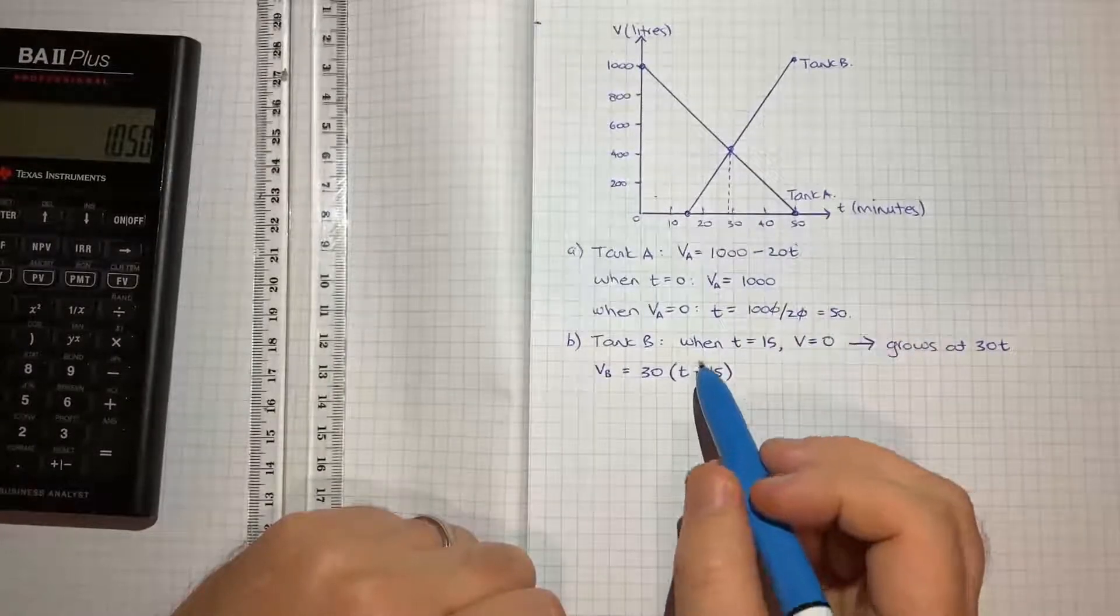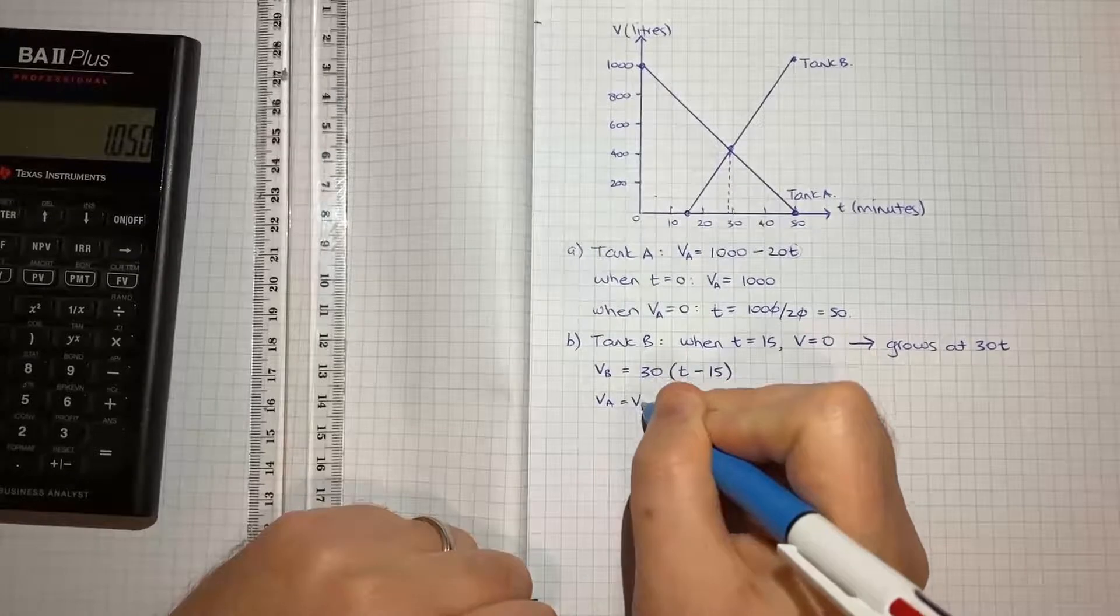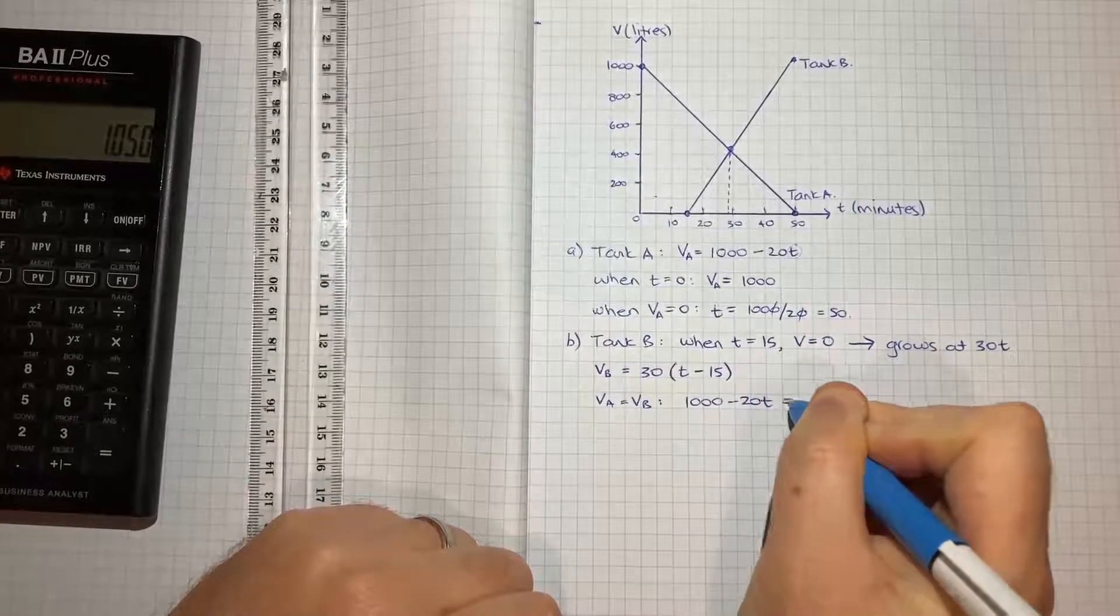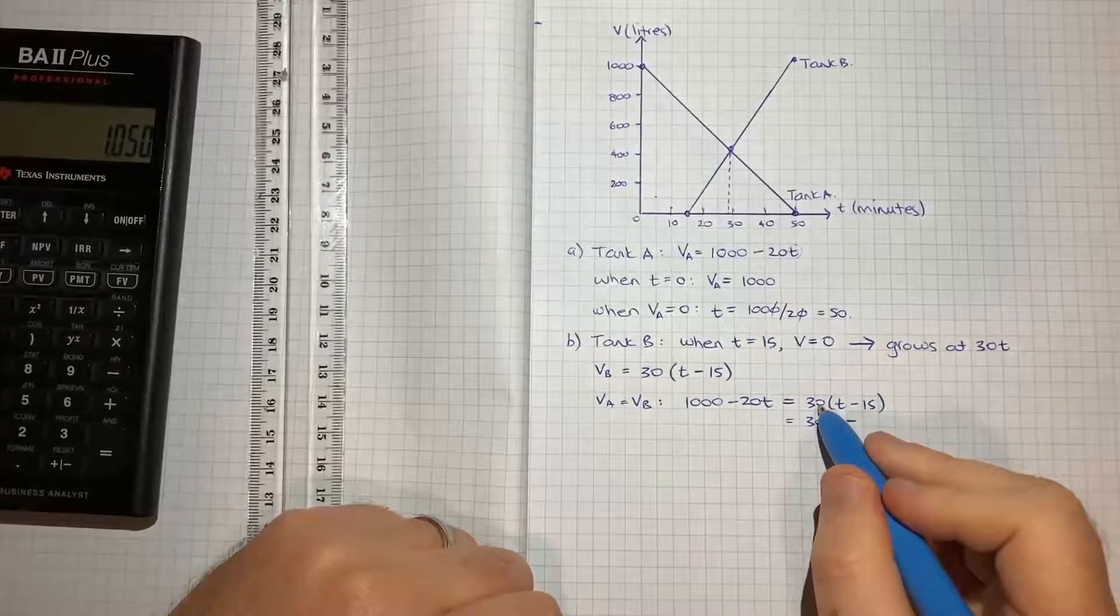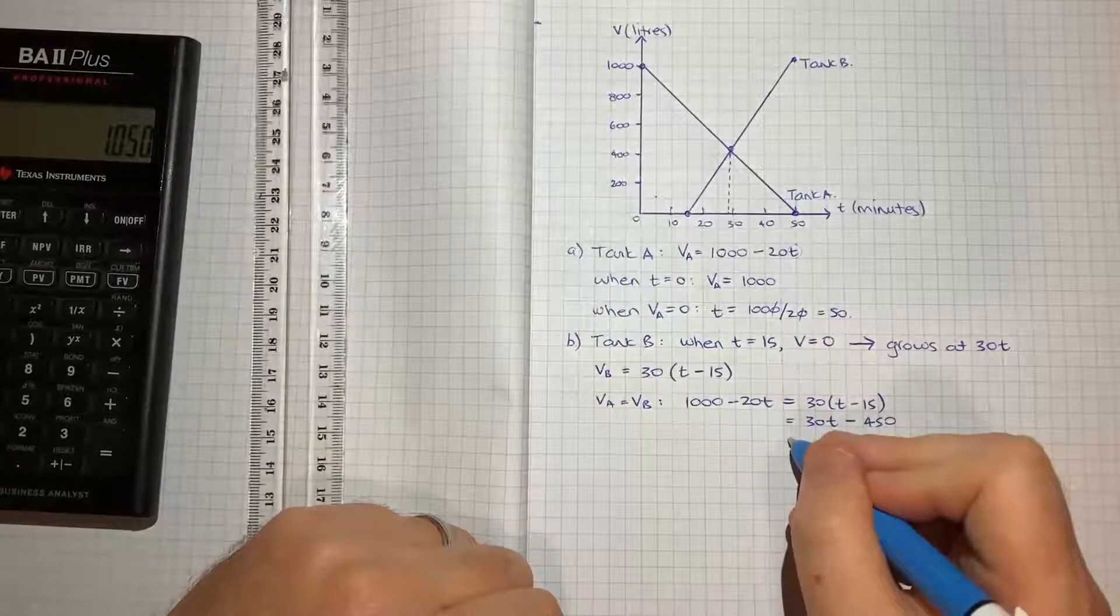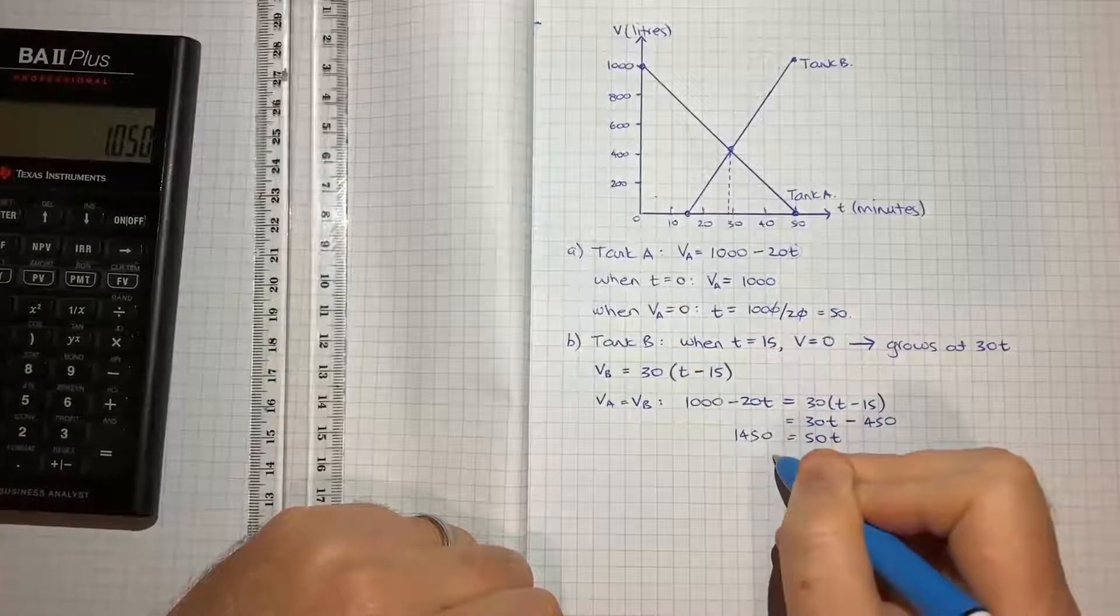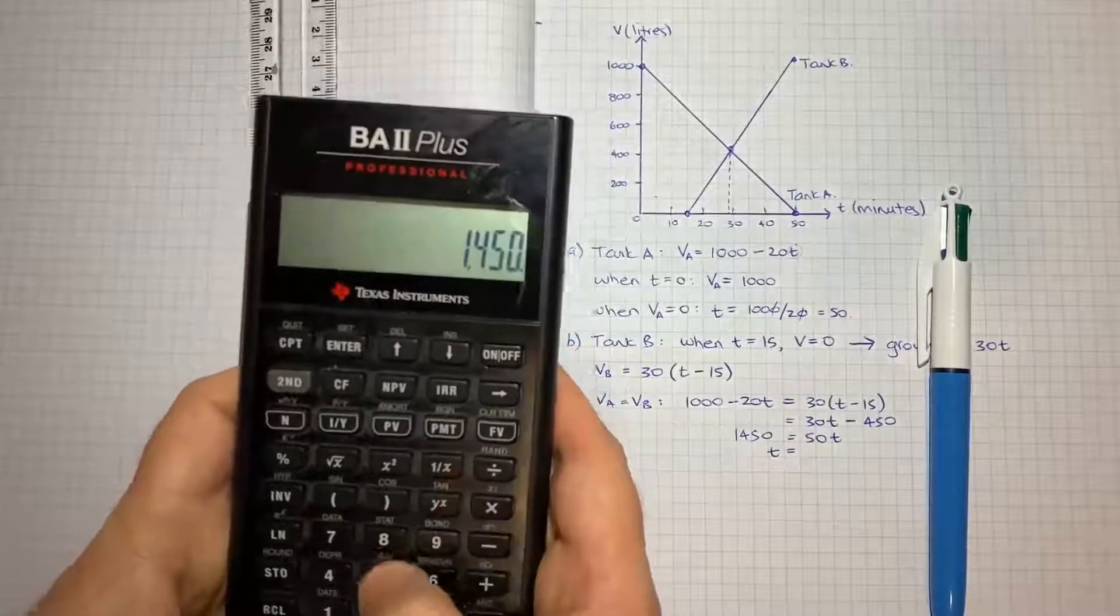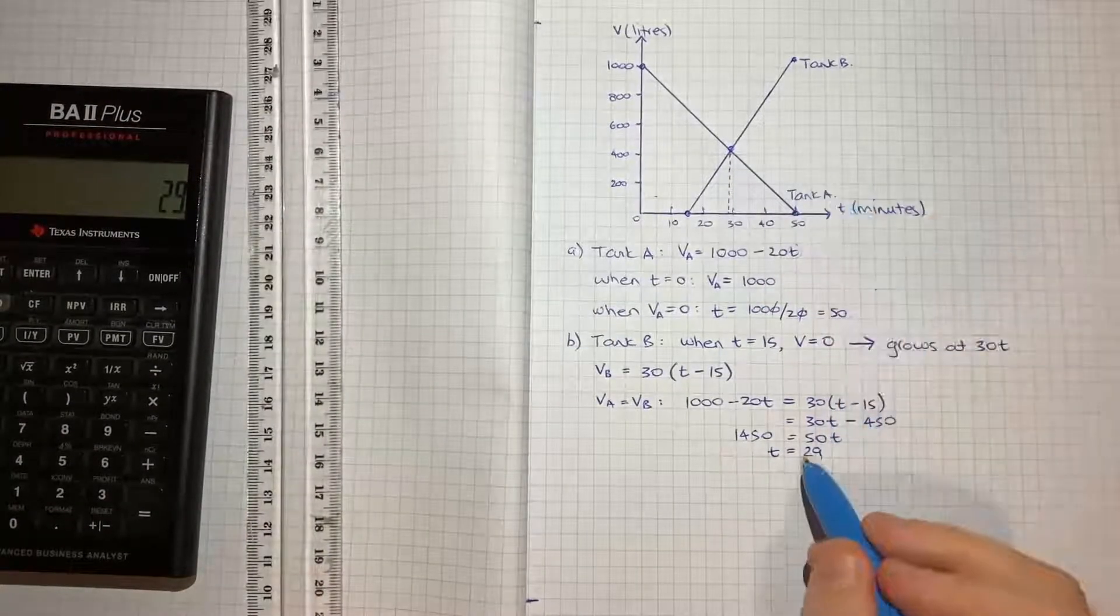Given we can't do that here, I'll use the 'or otherwise' approach, which is algebra. We can let VA = VB and solve for T. So VA = 1000 - 20T, VB = 30(T - 15) = 30T - 450. Solving for T, we bring the 20T over to get 50T, and bring the 450 over to get 1450. So T = 1450 ÷ 50 = 29, which is consistent with what we see visually. That's how you tackle part B.